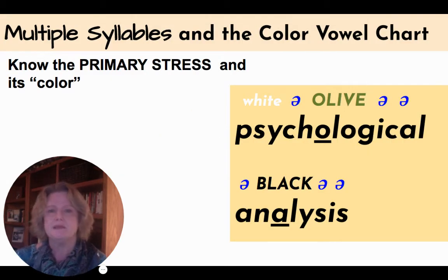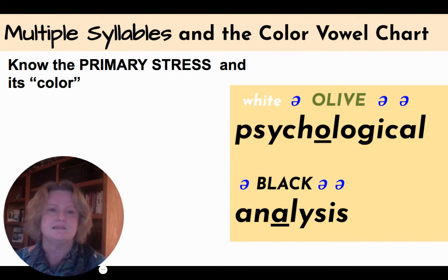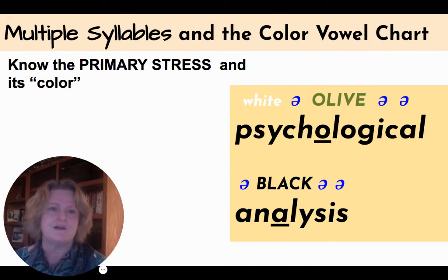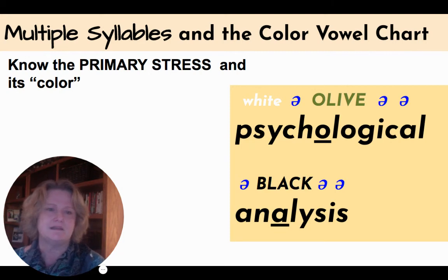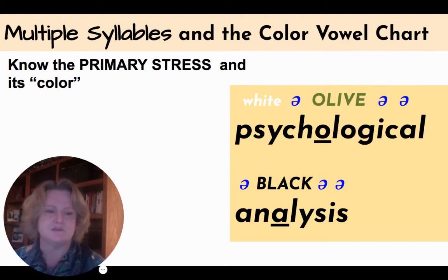When you have many syllables, you need to know what the primary stress is — like in psychological. The stress is on the second syllable, which is olive. PSY has a secondary stress and should be white. All other vowels are just schwa. Analysis — black stressed vowel — everything else is schwa.